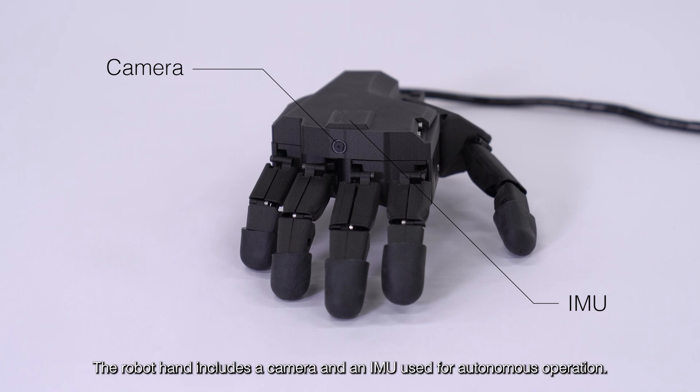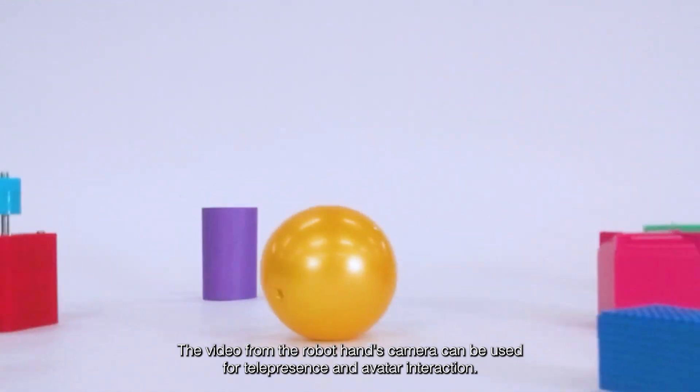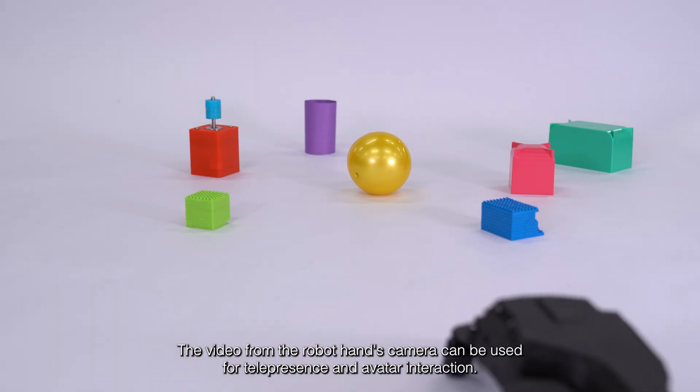The robot hand includes a camera and an IMU used for autonomous operation. The video from the robot hand's camera can be used for telepresence and avatar interaction.